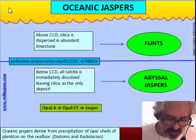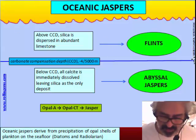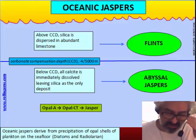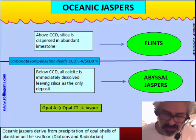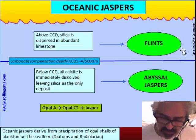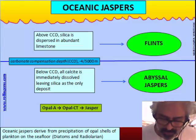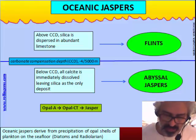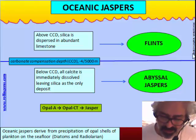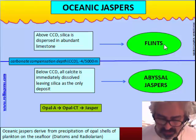Oceanic jaspers are divided into flint and abyssal jaspers. This distinction is not usually made because flint and jaspers are considered two different kinds of rock. There is some quartz, some pelitic material from rivers, and mostly small phyllosilicates in both flint and abyssal jasper. But in flint there is also some carbonaceous material.